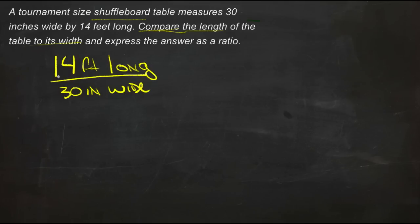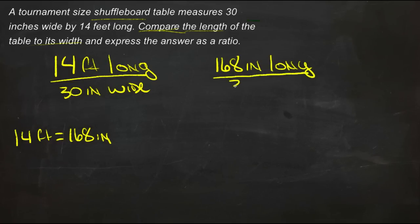If I convert one of these to the other units, say in this case we'll convert feet to inches, 14 feet would be the same as 168 inches. Then I could express this part in inches and compare them a little more, a little more apples to apples. So we would say that the length on top would be 168 inches long compared to 30 inches wide.